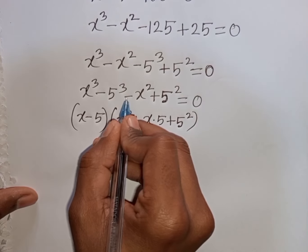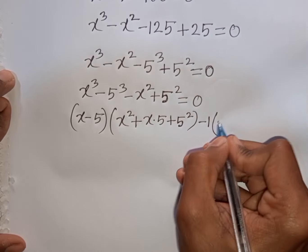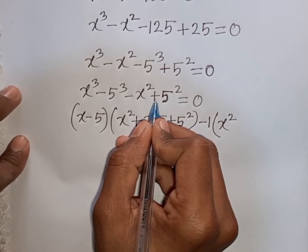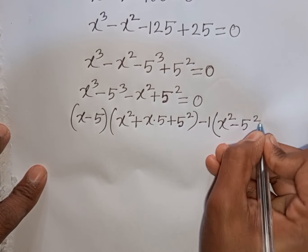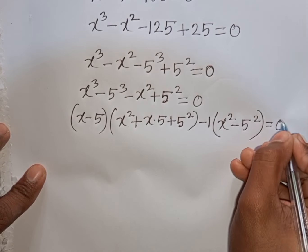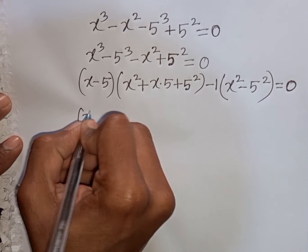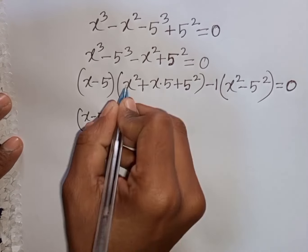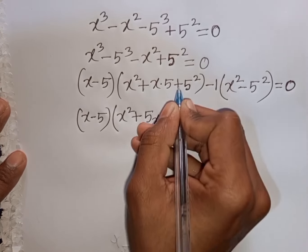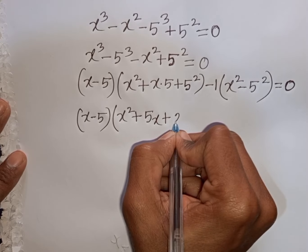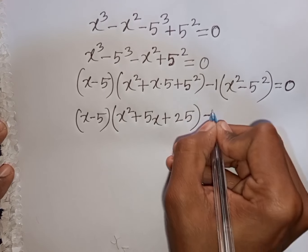That means (a - b)(a² + ab + b²) — this is the formula of a³ - b³. Then from the remaining terms I take out common factor minus 1. So minus 1 is outside the bracket, giving minus 1 times (x² - 5²), equals 0.